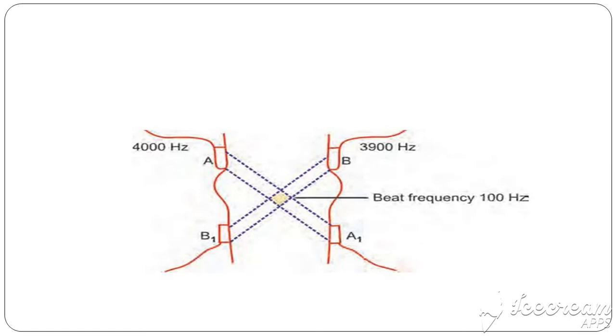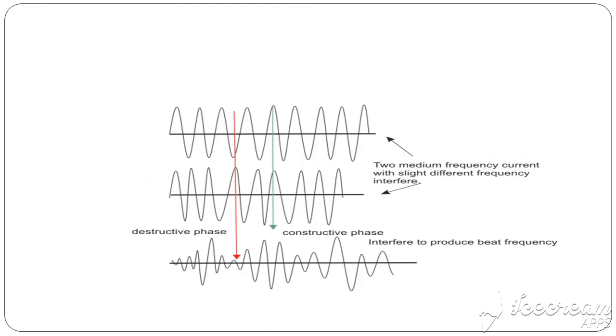And the beat frequency - we have to place the IFT electrodes in such a way so that the treatment area will come under the beat frequency. That's why the electrodes are placed diagonally in IFT. So these are the waveforms. Two medium frequency currents with slight different frequency interfere.